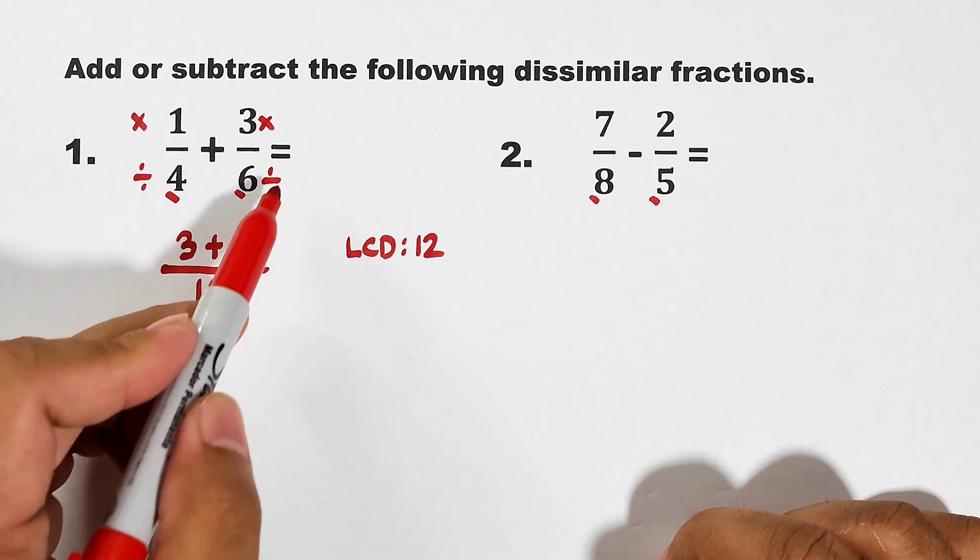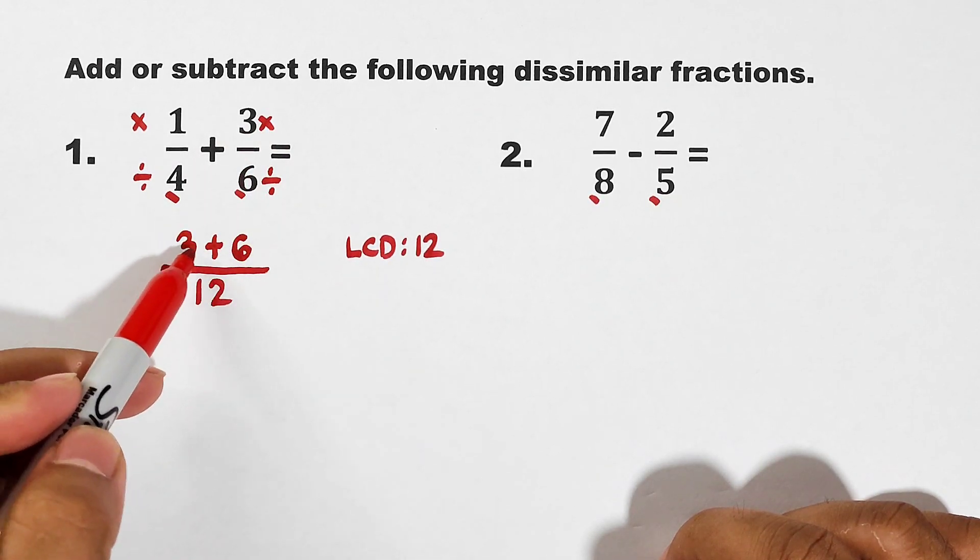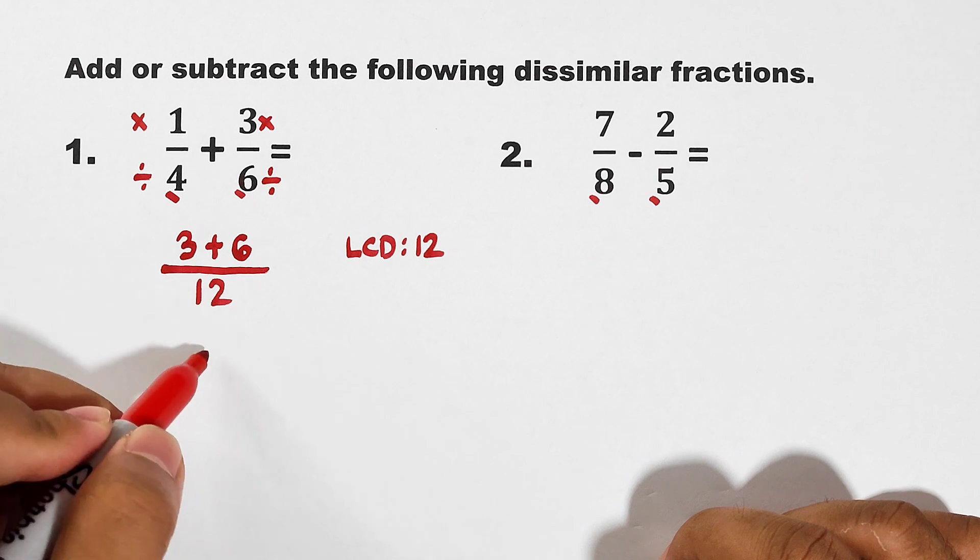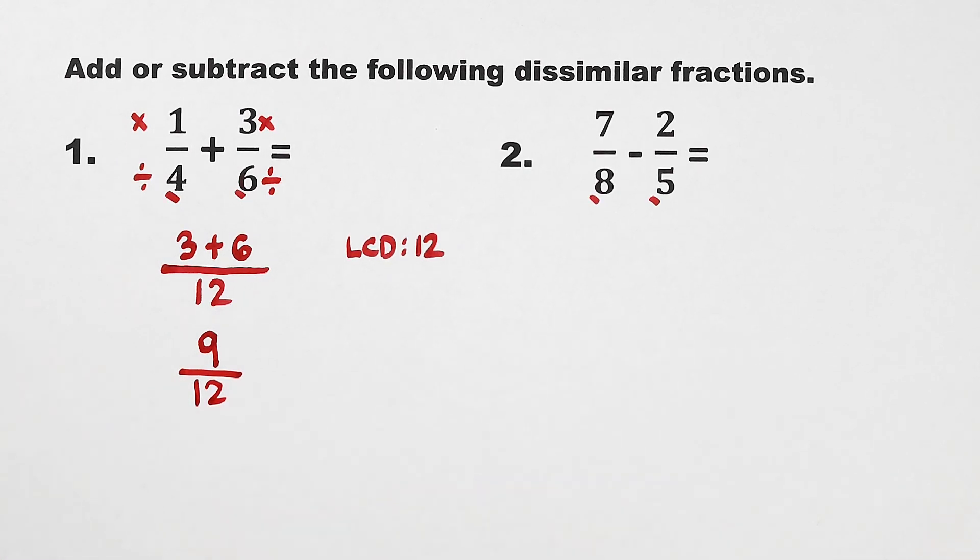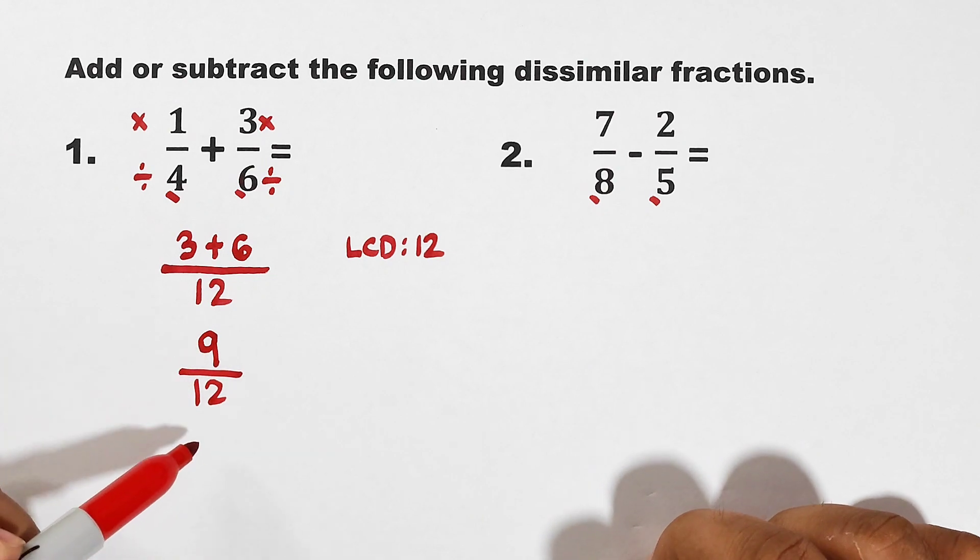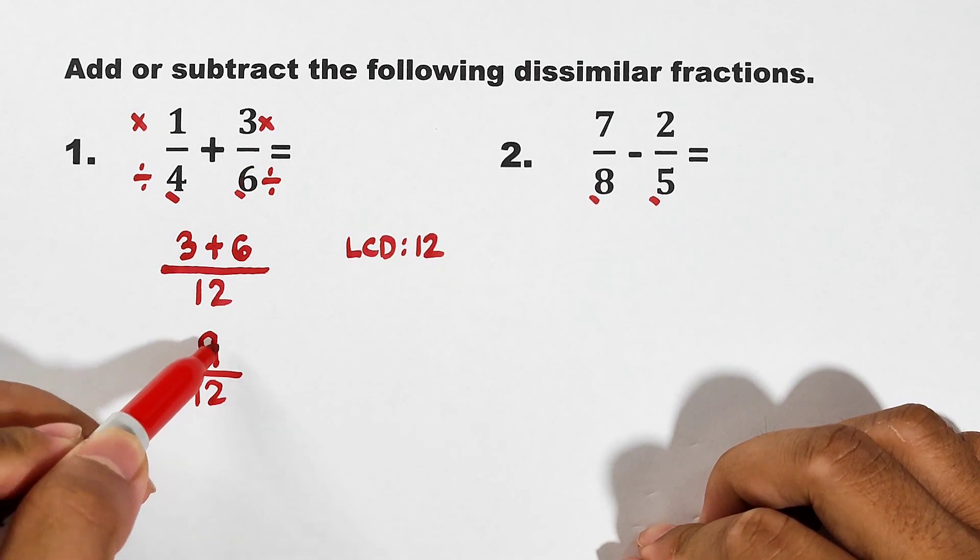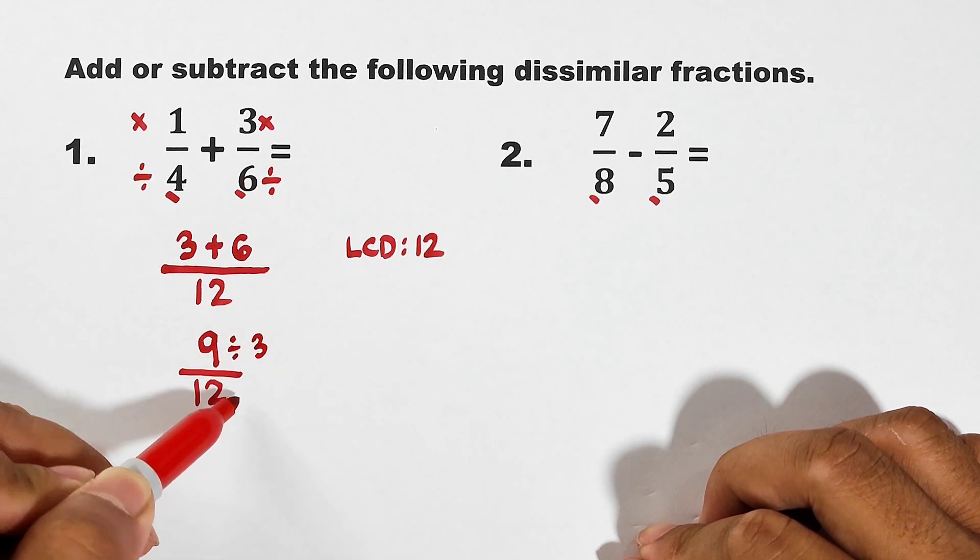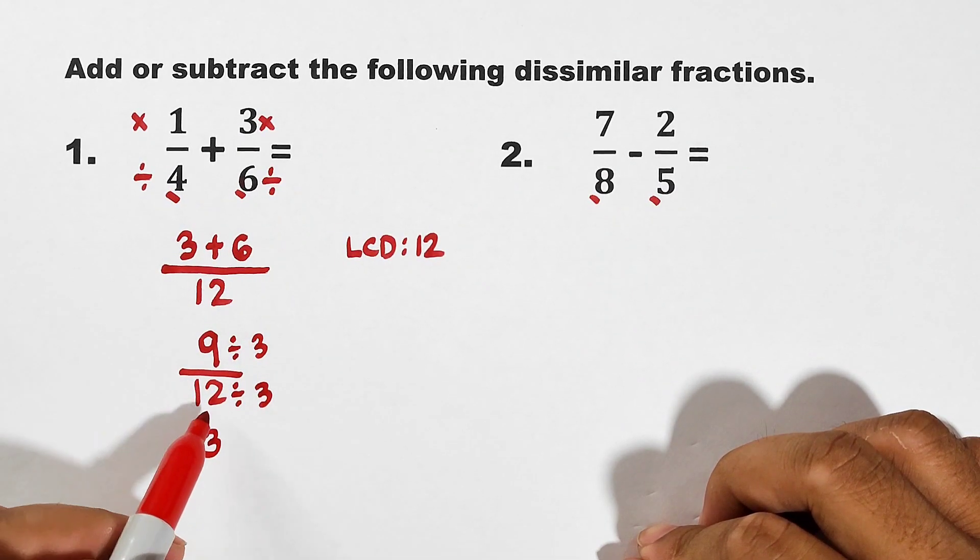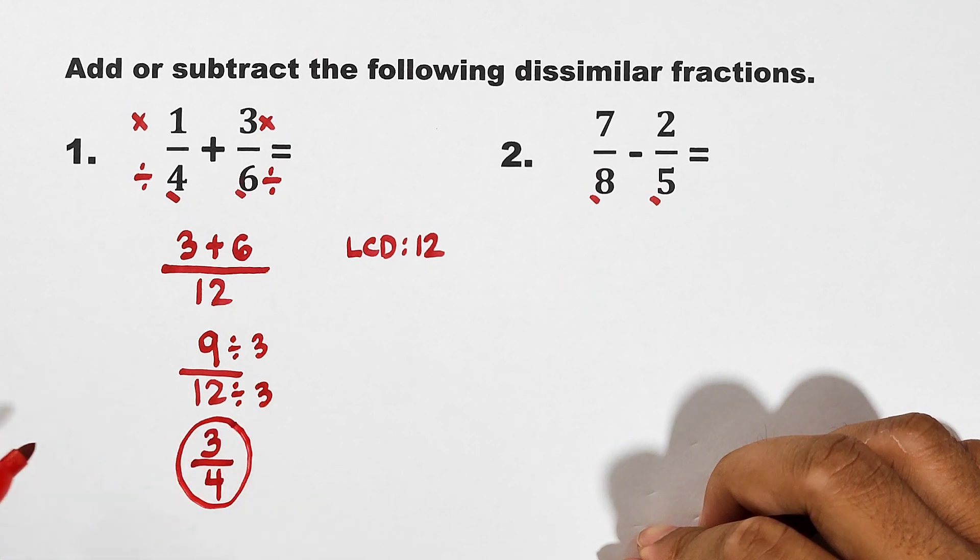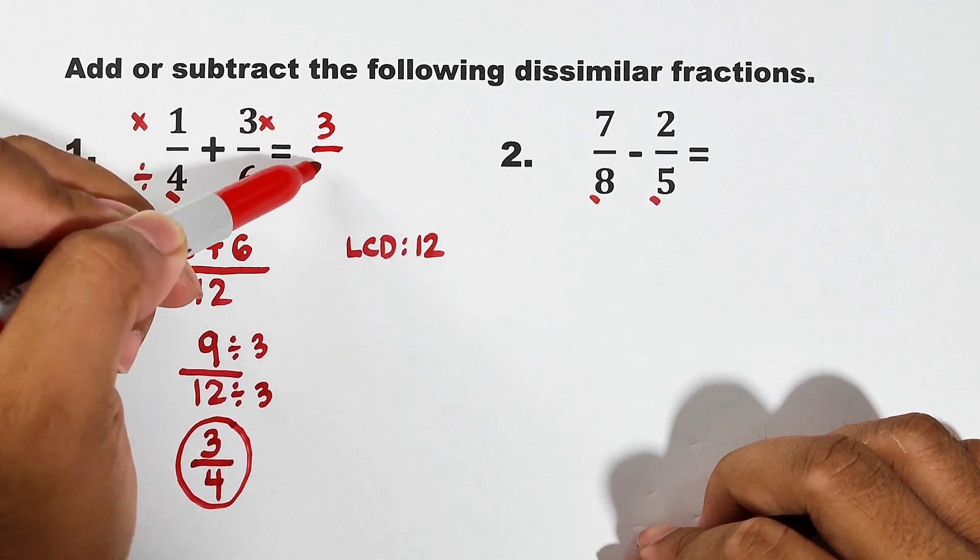So let me repeat, 12 divided by 6 is 2. Times 3, that is equal to 6. And then you're going to add your numerators. 3 plus 6 is equal to 9. Then copy 12. Now, in the operation of fractions, you're required to express your final answer in simplest form or in lowest terms. This 9 and 12 can be simplified. What we need to do is to divide your numerator and denominator by 3. 9 divided by 3 is equal to 3. Then 12 divided by 3 is equal to 4. This is now the final answer for item number 1.